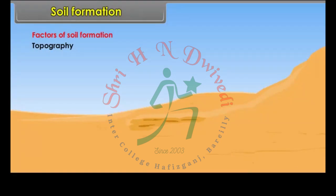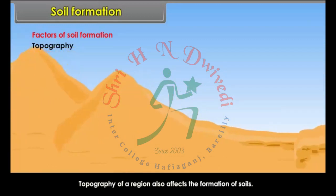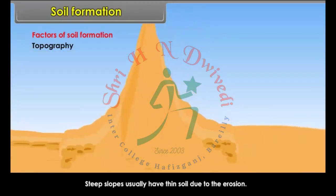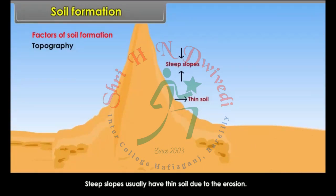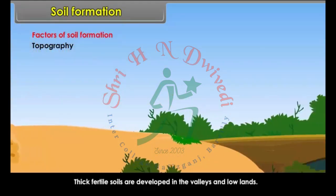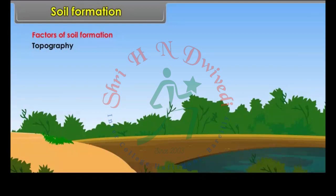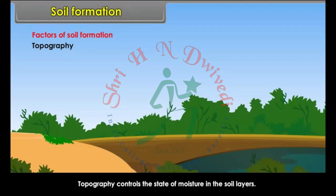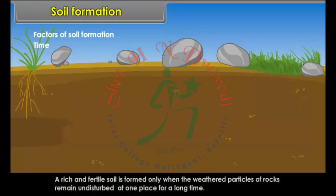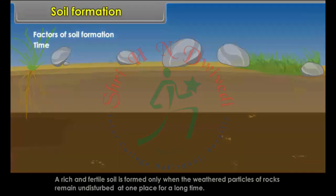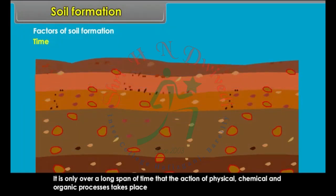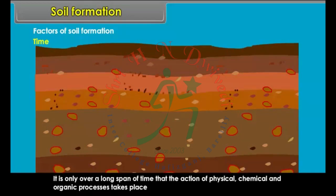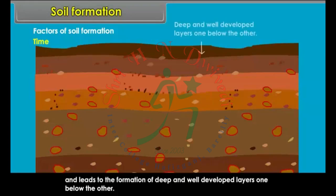Topography of a region also affects the formation of soils. Thick, fertile soils are developed in the valleys and lowlands. Topography controls the state of moisture in the soil layers. Time: a rich and fertile soil is formed only when the weathered particles of rocks remain undisturbed at one place for a long time. It is only over a long span of time that the action of physical, chemical and organic processes takes place, leading to the formation of deep and well-developed layers one below the other.